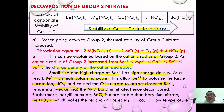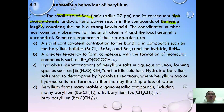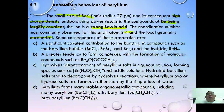Next we study the anomalous behavior of beryllium. Due to its small cationic size and high charge, beryllium has high charge density, making it largely covalent and a strong Lewis acid. The most commonly observed coordination number for this small atom is 4, with tetrahedral local geometry. Unlike other group 2 elements, beryllium does not have empty d orbitals.